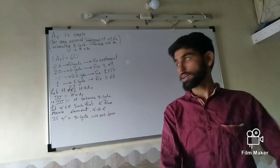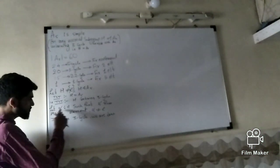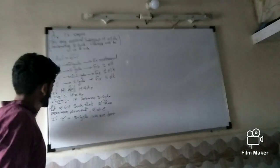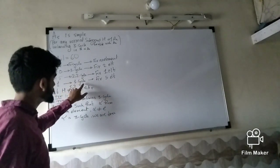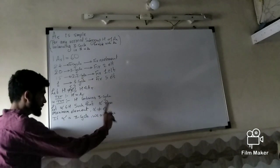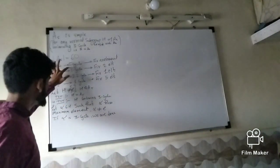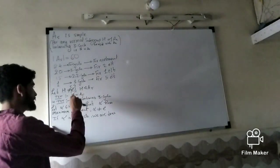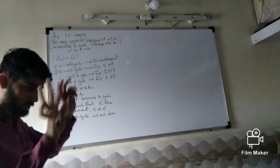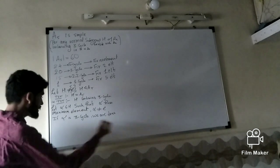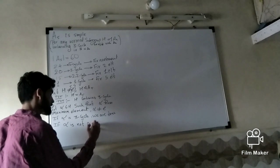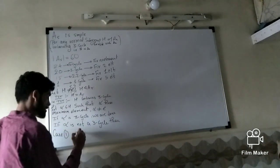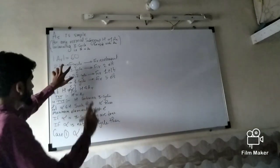We consider an element alpha in H such that alpha fixes the maximum number of elements. We know every element is of one of these cycle types. Since alpha is not equal to identity, alpha can be a 5-cycle, 3-cycle, or (2,2)-cycle. If alpha is already a 3-cycle then we are done, because there is a 3-cycle in H and by our result H equals A5. So we handle the remaining cases.